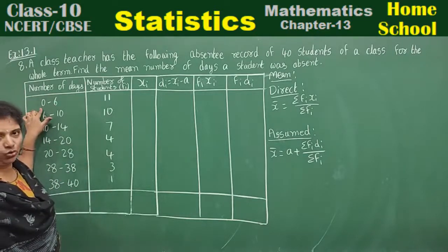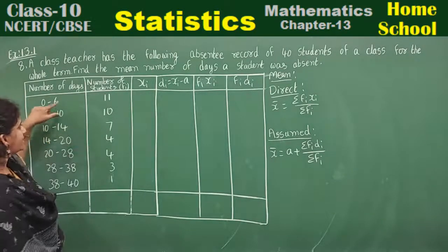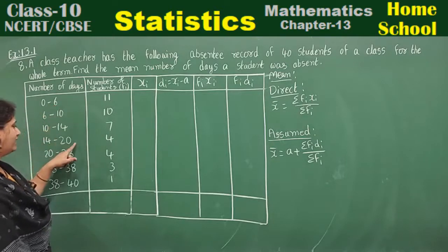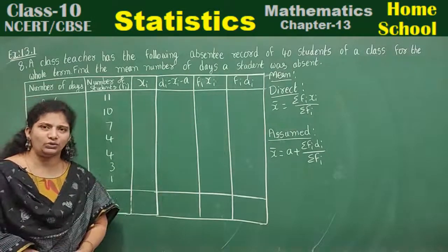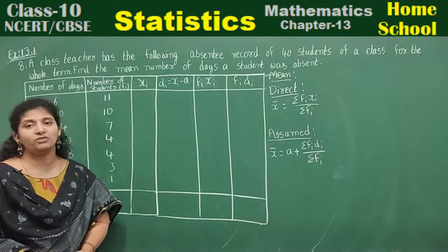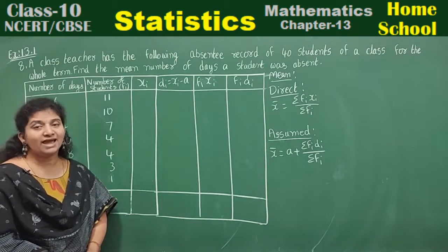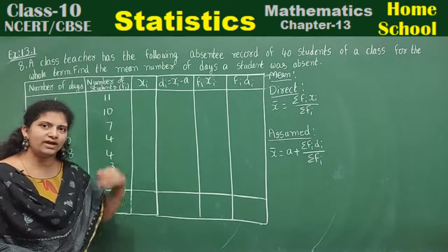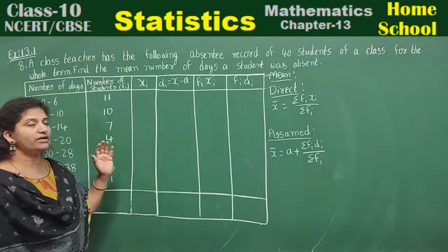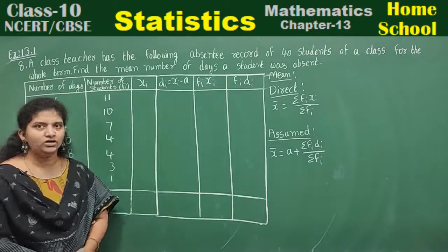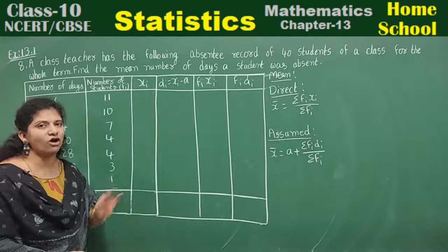6 minus 0 is 6. 10 minus 6 is 4. 14 minus 10 is 4. The class sizes are 6, 4, 4, 6, 8 — the class size is not a constant value. If the problem is like this, we cannot do it using the step deviation method, because H is not constant. If we had the same class size, we could apply the step deviation method. So don't try the step deviation method — better choose the direct method or assumed mean method.